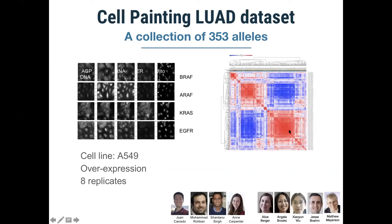Going back to our lung adenocarcinoma study, we created a collection of 353 alleles using this assay, covering most of the alleles studied before with gene expression, in order to analyze whether the phenotypic differences observed with imaging capture the same observations made with gene expression. This is done in collaboration with Alice Berger, Ann Carpenter, and Jesse Boehm at the Broad Institute.